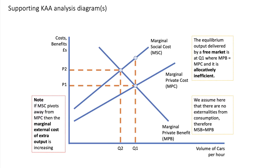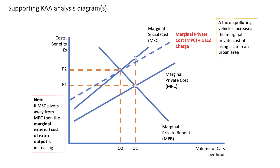You will need to support your answer with a diagram. The classic diagram to draw is an externalities diagram. Crucially, you want to show where marginal social cost diverges from marginal private cost, leading to a level of output Q1 which is higher than the social optimum Q2. You can then develop the diagram by adding the tax — showing how the charge increases marginal private cost of using older, polluting vehicles, causing a contraction up the demand curve towards Q2. You could also show the revenue that the tax might generate.